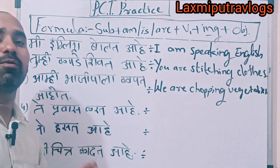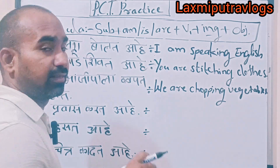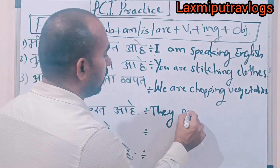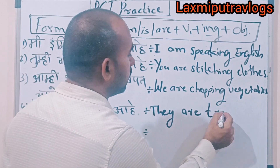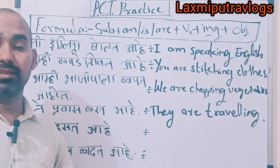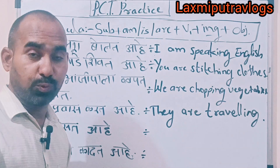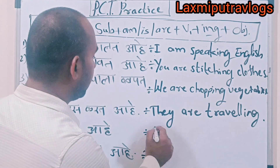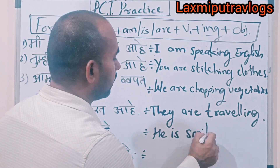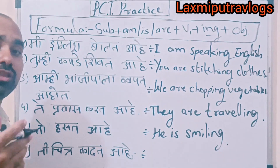Next sentence: 'Te pravas karata hai' — 'te' means 'they' in English, so the sentence is: 'They are traveling.' Next: 'He is smiling.'